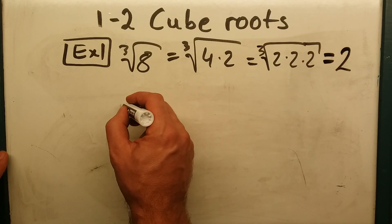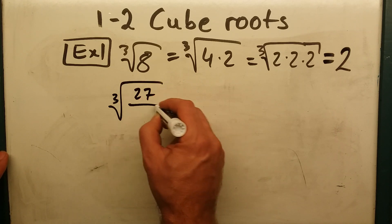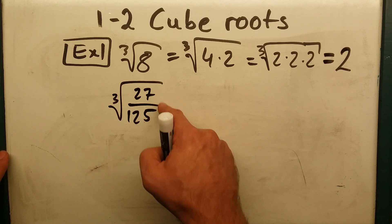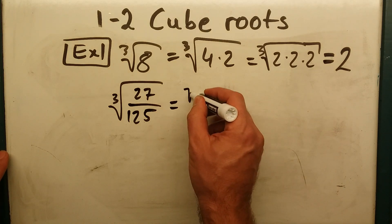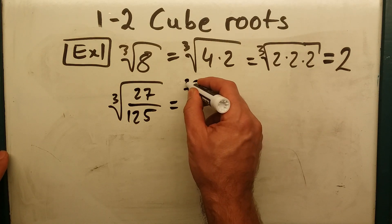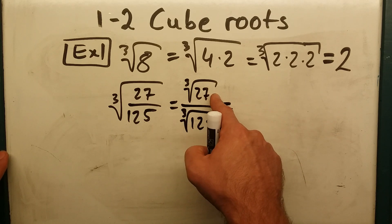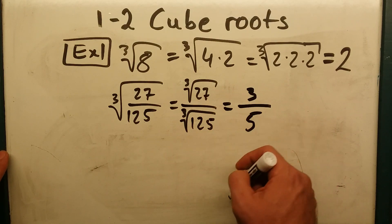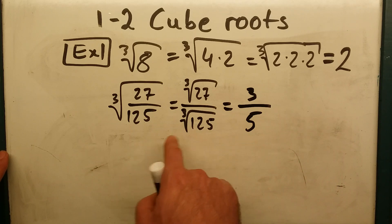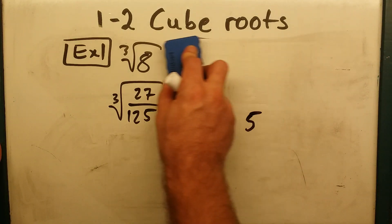Now if you have a fraction, you want to do the cube root of 27 over 125. You can do the cube root of each part of this, because this is the same as the cube root of 27 over the cube root of 125. So the cube root of 27, we've already found, is 3. The cube root of 125 is 5. You can type that into your calculator, or you can practice to know a few of these cubes at least. So we get 3 fifths.